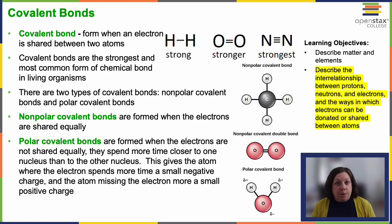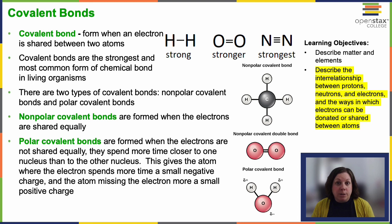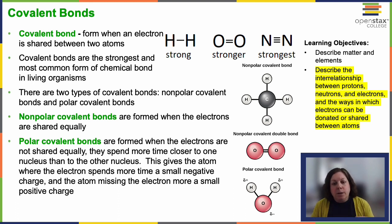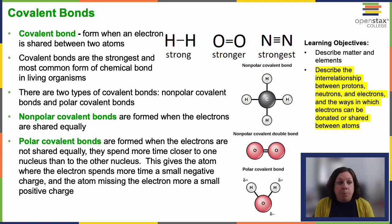Now we have covalent bonding. Ionic bonds are strong, but covalent bonding is even stronger, because in this case we actually share electrons rather than just being attracted to each other by charge. In a covalent bond we can have single bonds where one electron is shared, double bonds where two sets are shared, and triple bonds where three sets are shared.